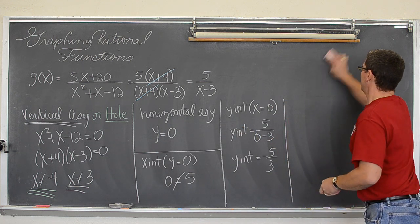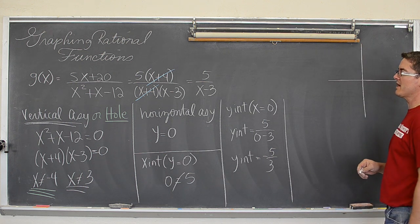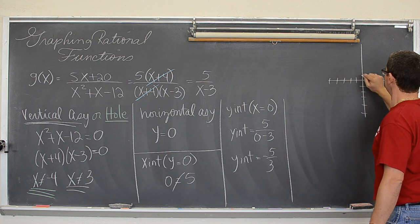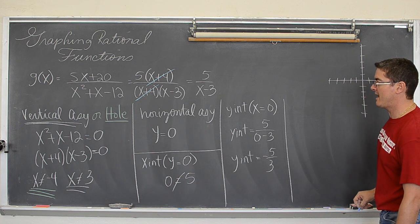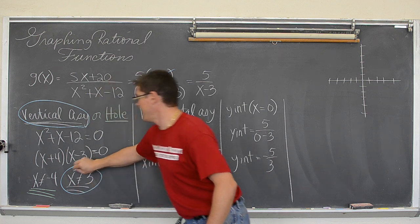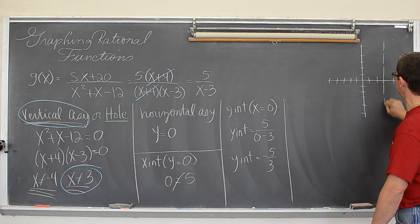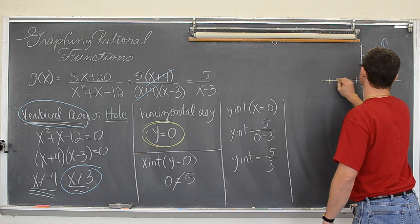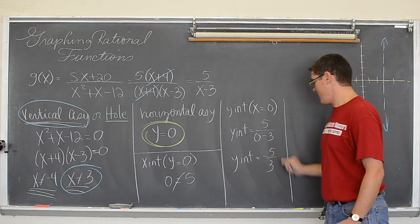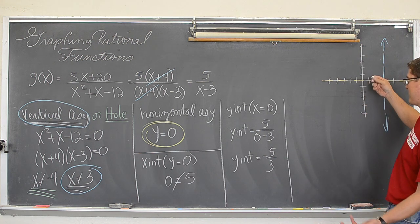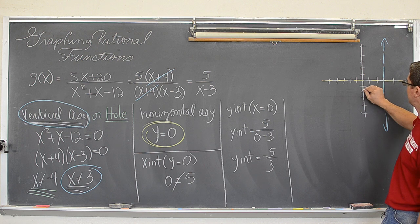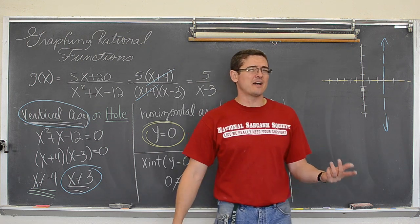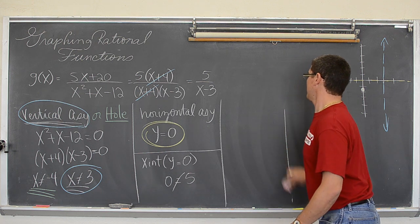So what do I got? I have got, so far, I can draw an xy-axis. I can draw a vertical asymptote at x equals 3. I can draw a horizontal asymptote at y equals zero. And I have a y-intercept of negative five-thirds. So that is just under negative two. So right there. I have done a lot of work to learn one point. So we need a table of values to finish this up, but I need more room. So I am going to get rid of this.